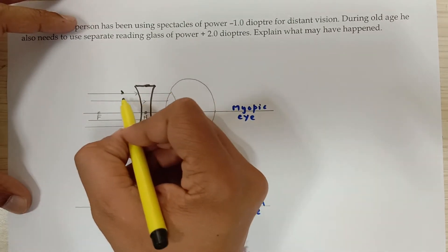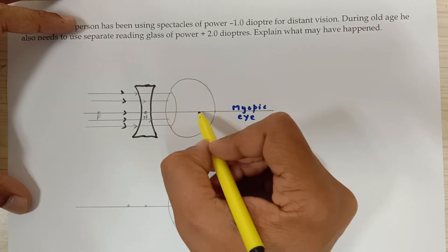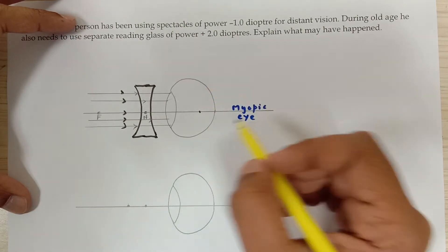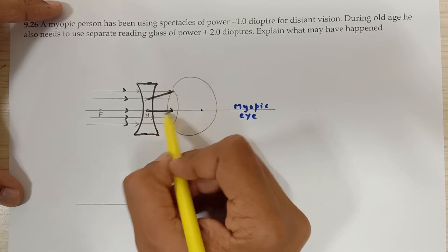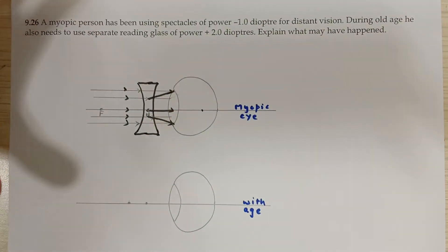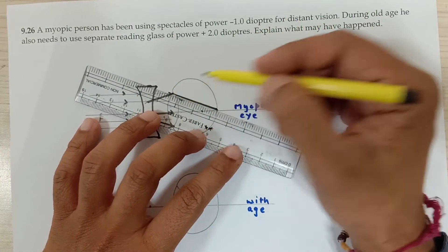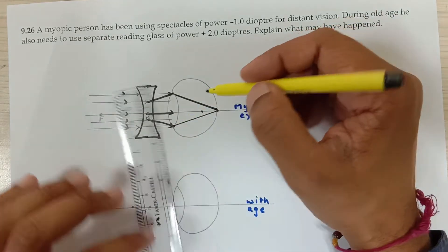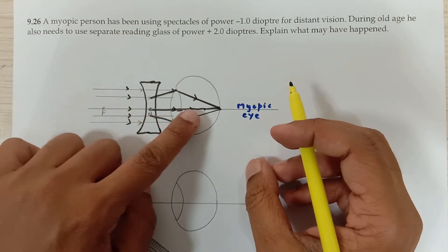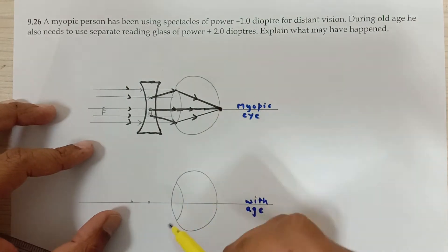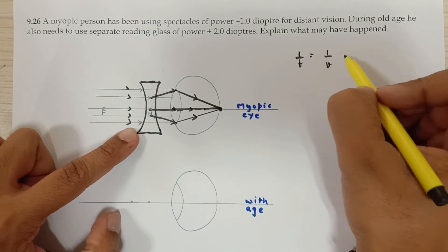Without the corrective lens, all rays coming in parallel were being converged before the retina. Now the diverging concave lens diverges these rays, and then the eye's converging lens converges them to the focus on the retina. With these spectacles he is able to see the image because now the image is formed on the retina. For the lens we use the lens equation: 1/f = 1/v − 1/u.